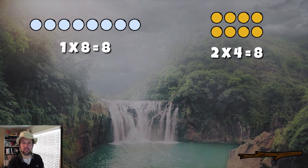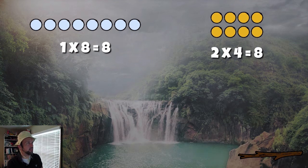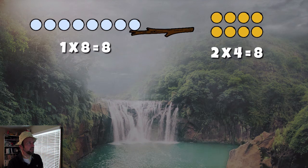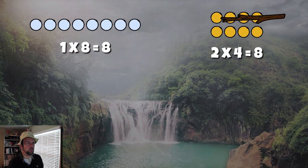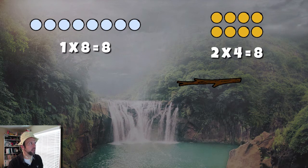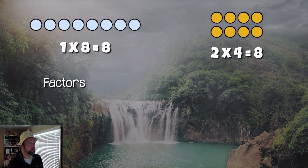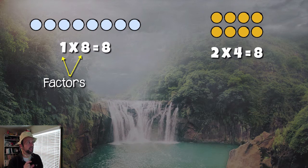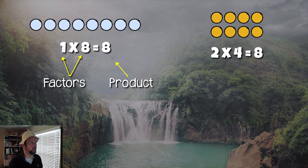Alright guys, take a second and look at these arrays we found here in the wild. See if you could tell me a multiplication sentence to identify both of these arrays. These arrays can be identified like this: we have 1 times 8 — one row of eight — that equals 8. And then we have 2 times 4, two rows of four, that equals 8 as well. So we found some arrays. Let's dive a little bit deeper and see if we can give some more details.